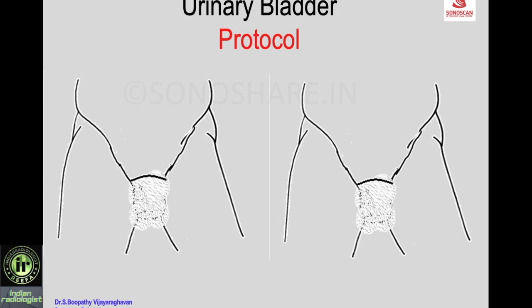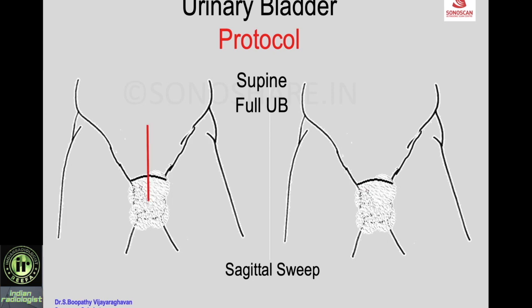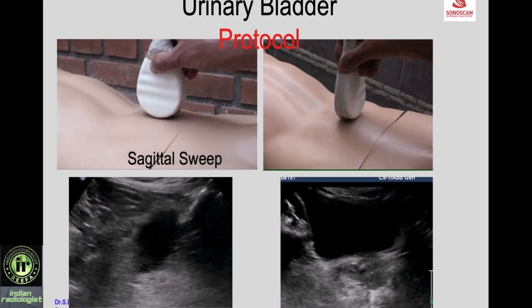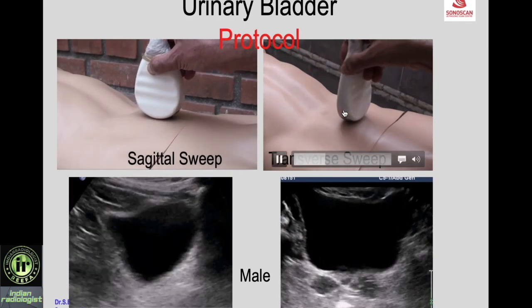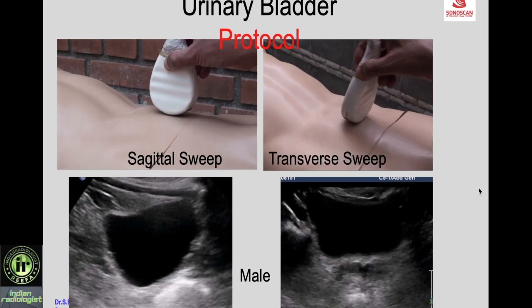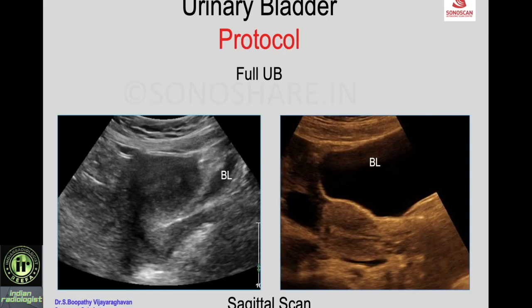Now coming to the urinary bladder. The protocol is with the patient supine with a full bladder. Make a sagittal sweep and then a side-to-side sweep, then turn the transducer 90 degrees, make a transverse scan, and perform an up-and-down transverse sweep to scan the entire volume of the bladder. You can see the sagittal sweep in the suprapubic region and the corresponding video of the transverse sweep in a male patient.